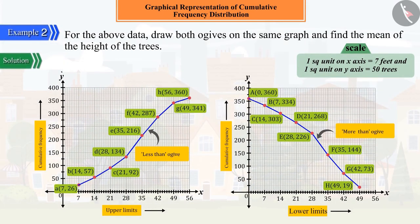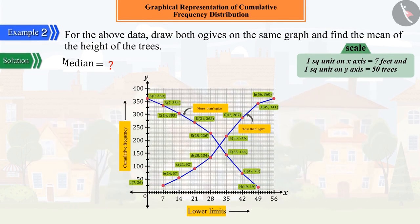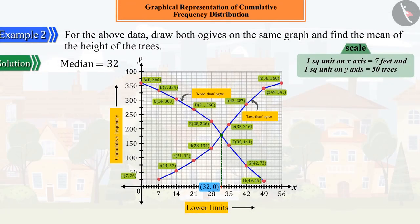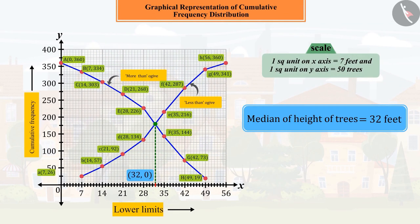Since we have to find the median, along with both types of ogives, can you guess what we have to do? Perfect! For this, we will draw both ogives on the same graph. If you look carefully, you can see that these two ogives intersect each other at a point. If we draw a perpendicular from this point of intersection on the horizontal axis, the point at which the perpendicular intersects the x-axis is the median of the data. Thus, 32 is the median, and we can say that the median height of the trees is equal to 32 feet.